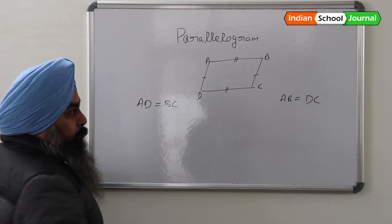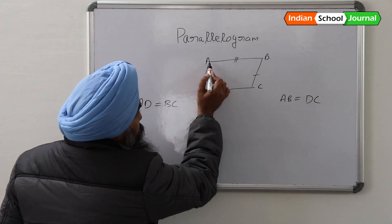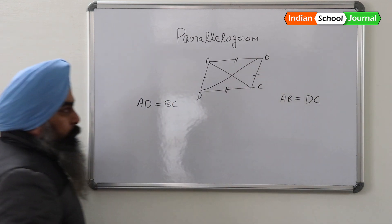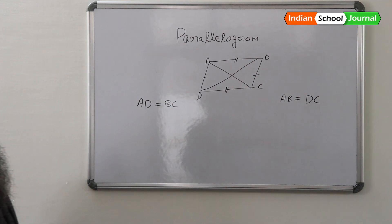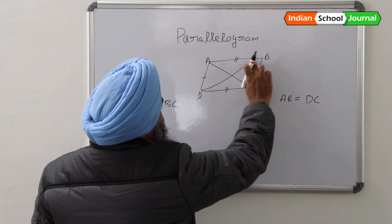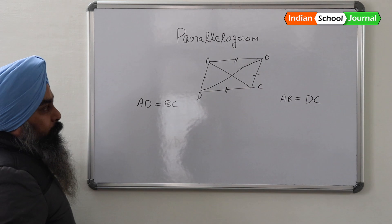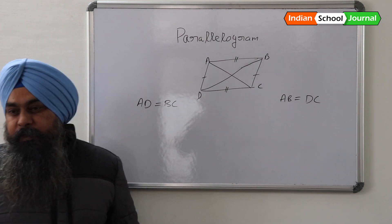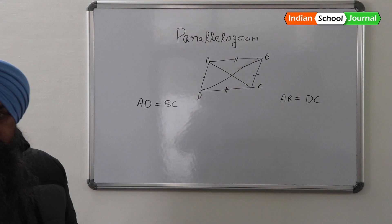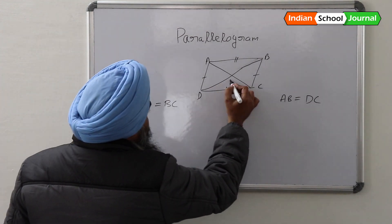Now, let us draw the two diagonals. What is the property of the diagonals of a parallelogram? It divides the parallelogram into two equal parts.